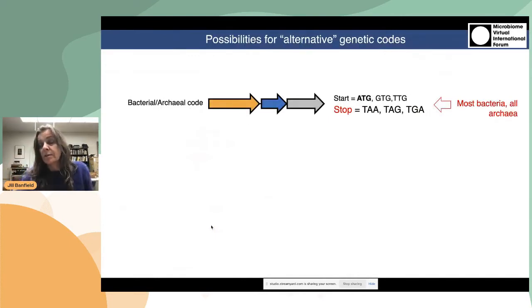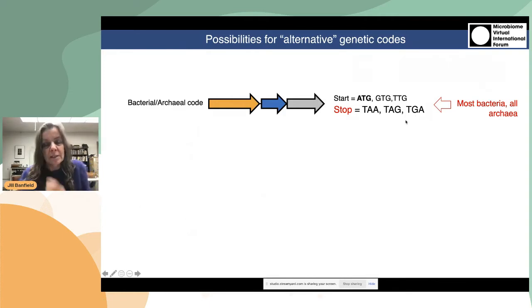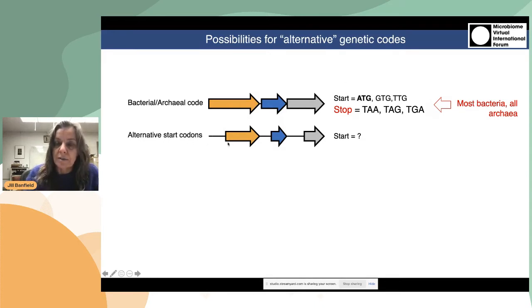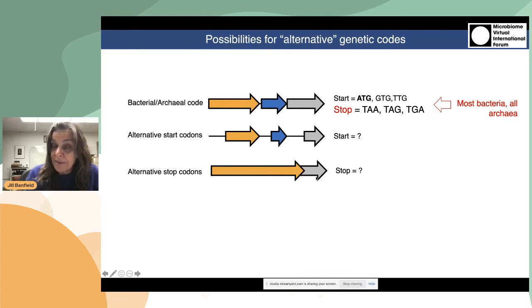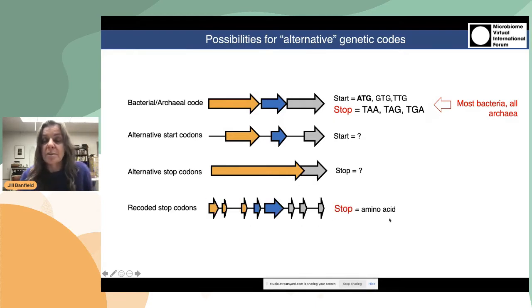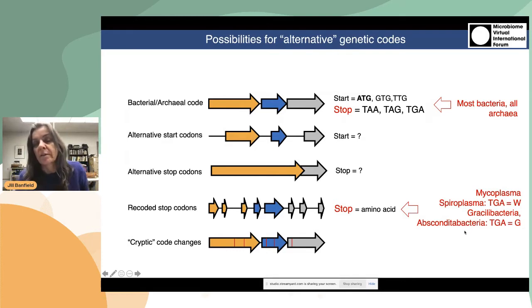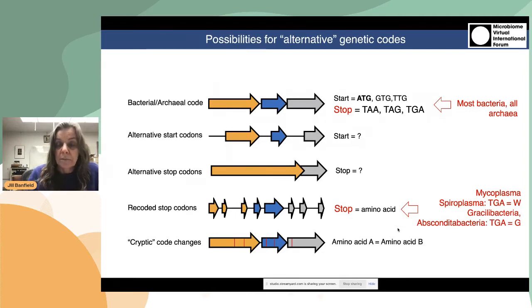Now I want to switch back to talk about alternative genetic codes. The bacterial code — code 11 — uses three stop codons: TAA, TAG, and TGA. Most bacteria, but not all, use this code. There are other possibilities in the genetic code: alternative start codons, alternative stop codons, or recoded stop codons, as we saw for the LAC phages. This has also been seen in bacteria — for example, mycoplasma, spiroplasma, and in CPR bacteria such as Gracilibacteria and Absconditabacteria.